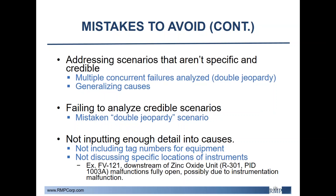Another mistake to avoid is addressing scenarios that aren't specific and credible. One example would be analyzing a double jeopardy scenario where multiple independent failures are occurring simultaneously — this is not considered credible and shouldn't be addressed. In contrast, avoid generalizing causes so much that you don't know what is being discussed. You always need to say more than just 'valve upstream of reactor,' as this could refer to a number of things.